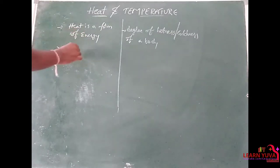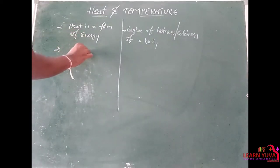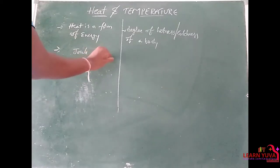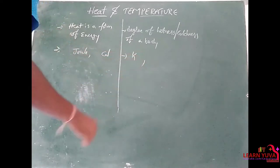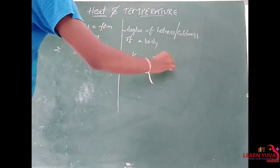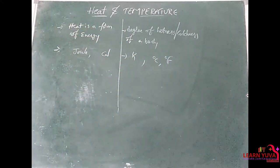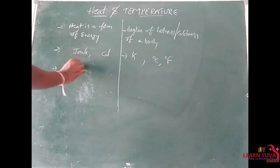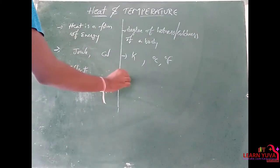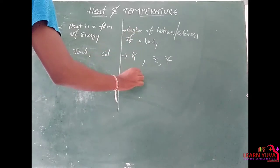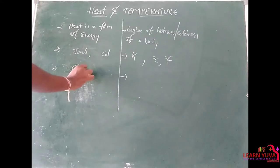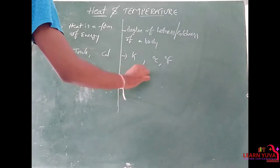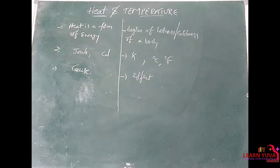The SI unit for heat is the joule; other units are calories. For temperature, other units are degrees Celsius and degrees Fahrenheit. Heat is the cause and temperature is the effect — the heating effect results in a change in temperature.